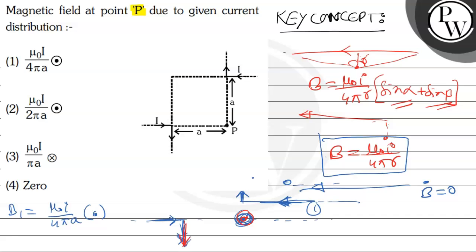The formula for B2 is also the same: mu naught I by 4 pi A, and the distance is the same. This is also outward. So the two vectors are in the same direction, so the result is simply twice this, which will be mu naught I by 2 pi A, and it will be outward.